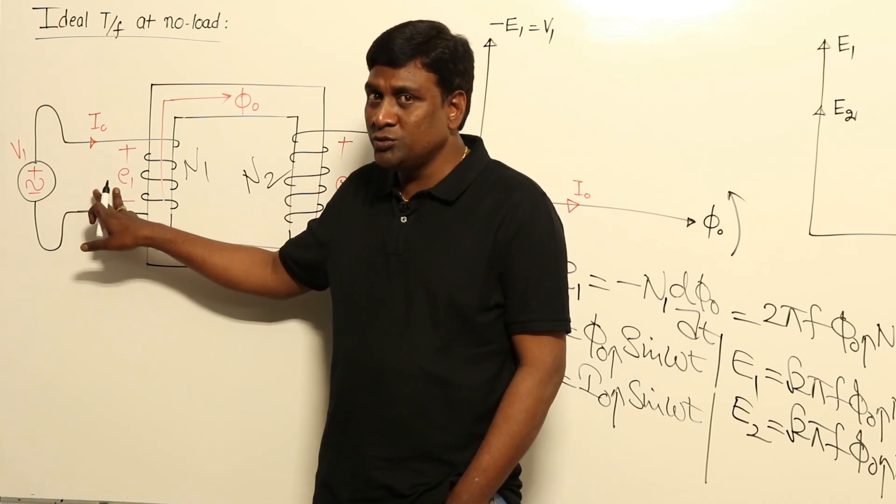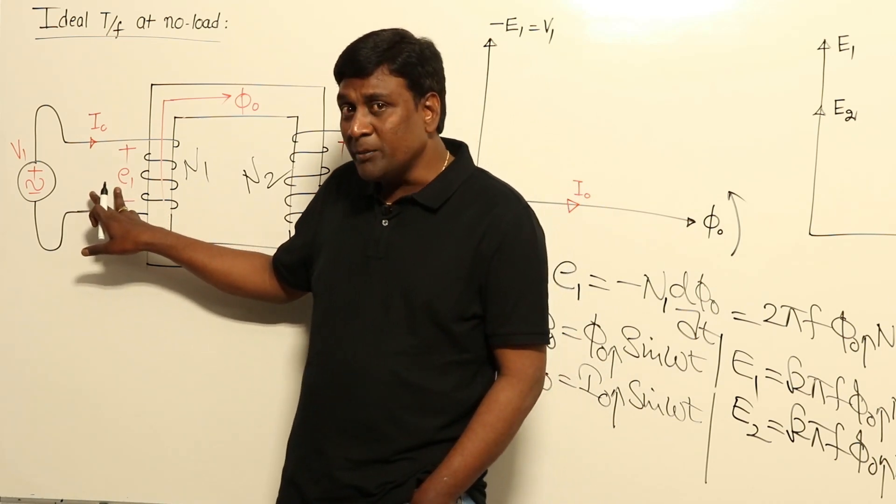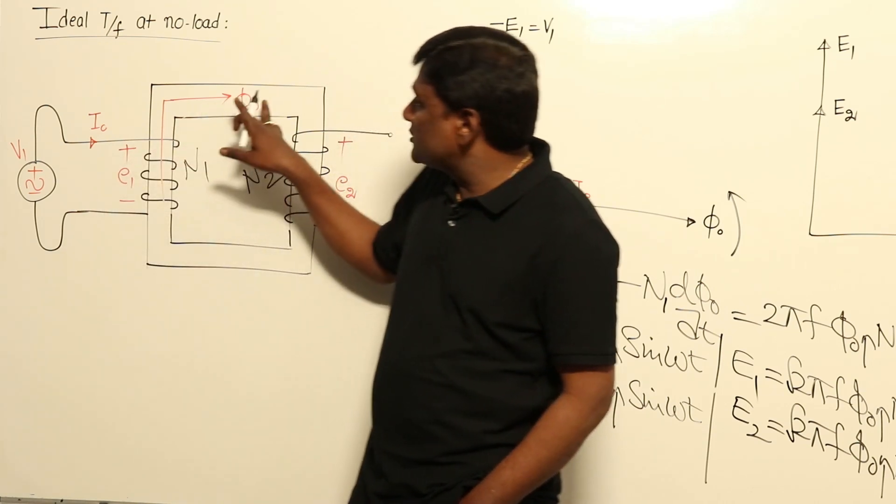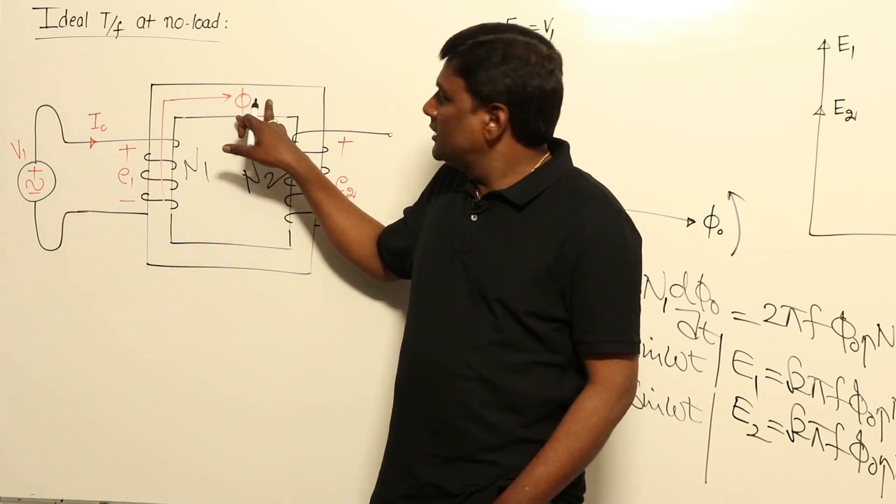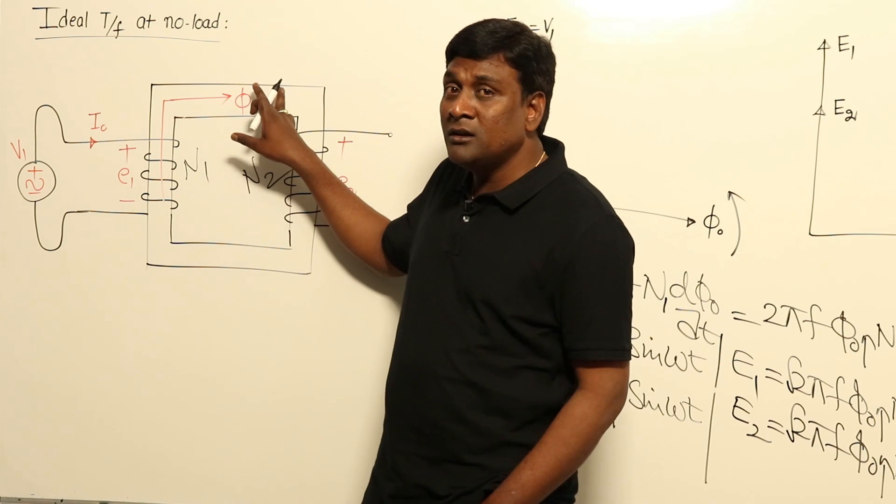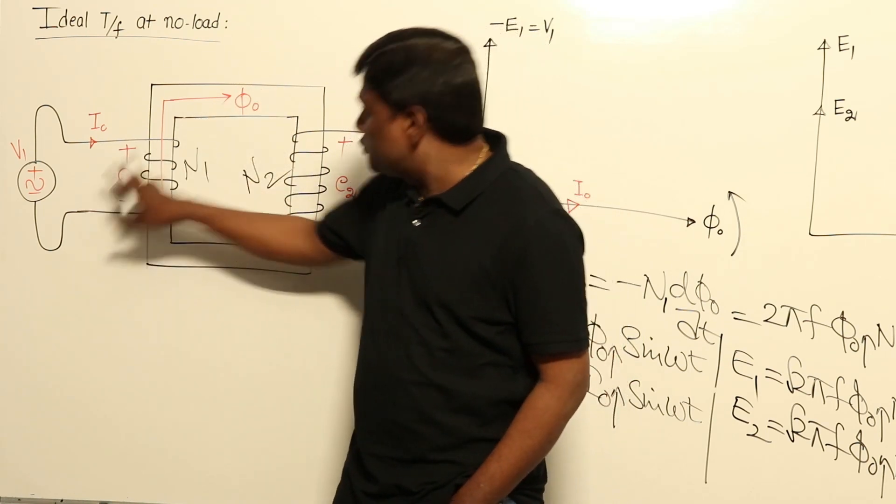Why this E1 is coming into the picture? Because of Φ0, flux variation. Now can E1 oppose Φ0? No. Actually E1 is induced because of Φ0.